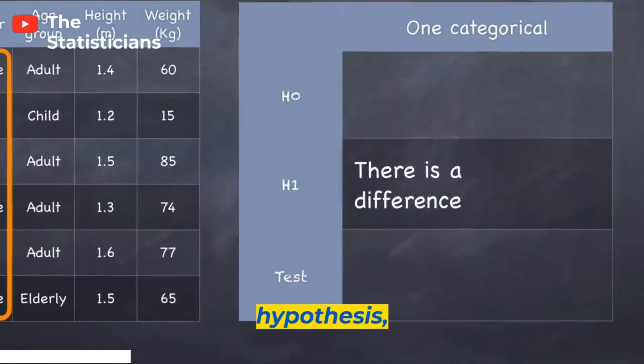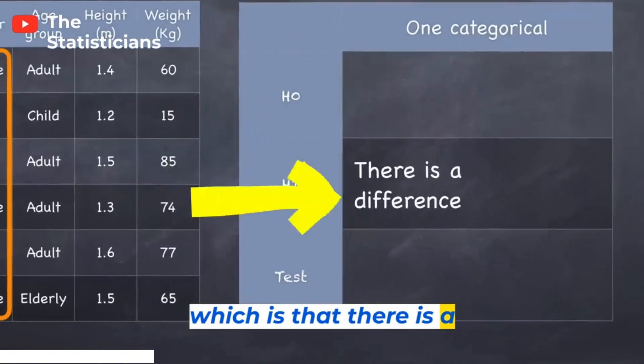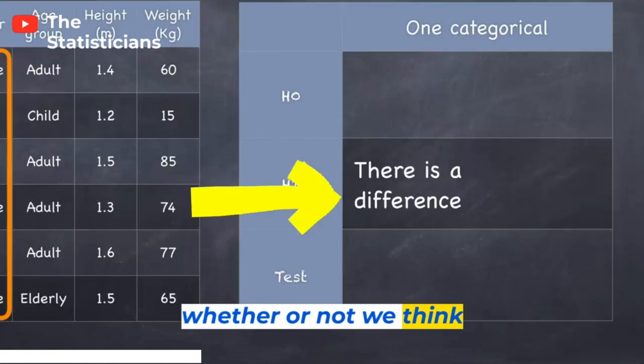Now we could state that as a hypothesis, which is that there is a difference between the number of men and women in the population. And we could check to see whether or not we think that that is the case.